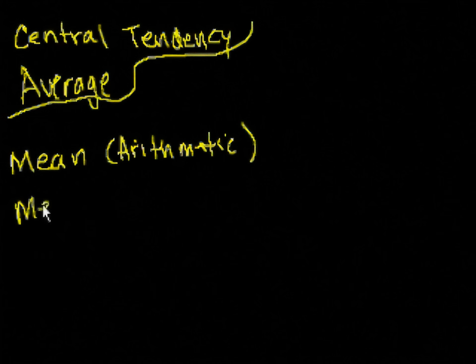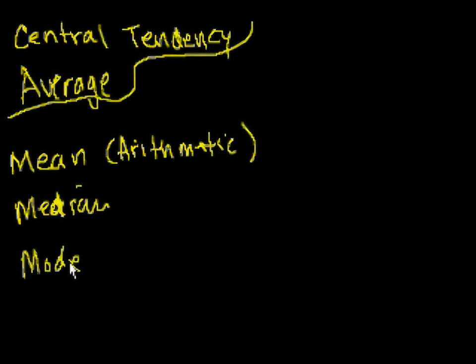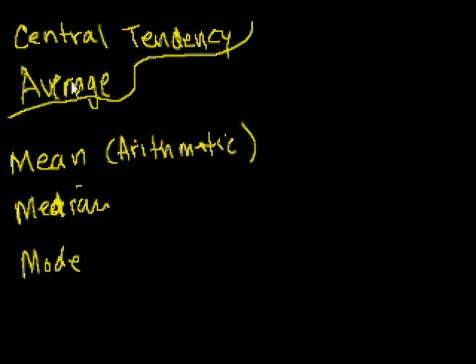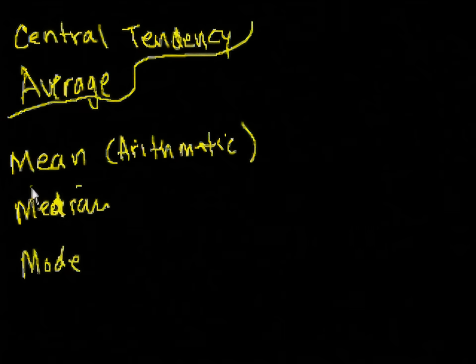There's the mean, the median, and the mode. And in statistic speak, these all can kind of be representative of a data set's or a population's central tendency or a sample's central tendency. And collectively, they can all be forms of an average. And I think when we see examples, it'll make a little bit more sense.